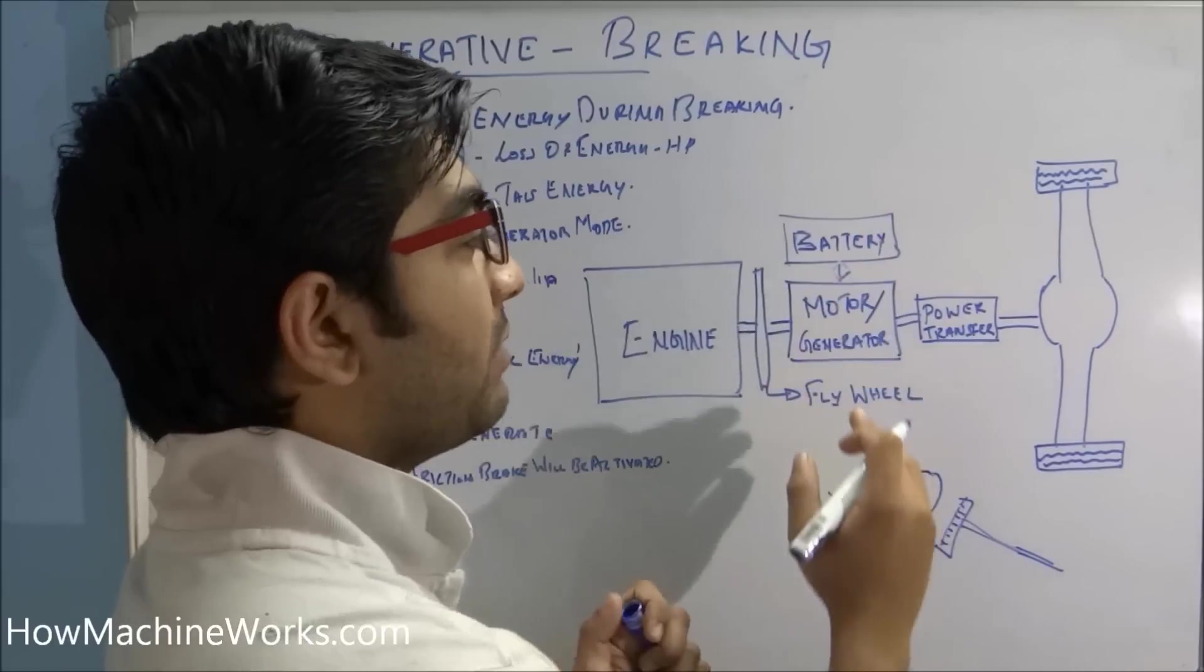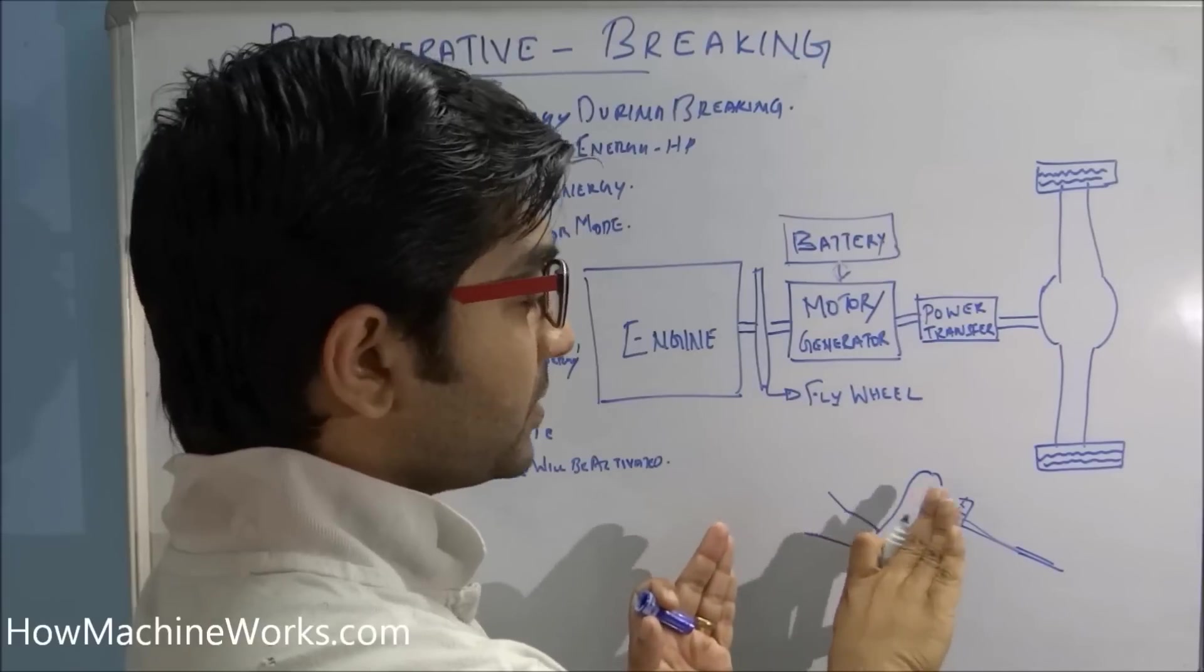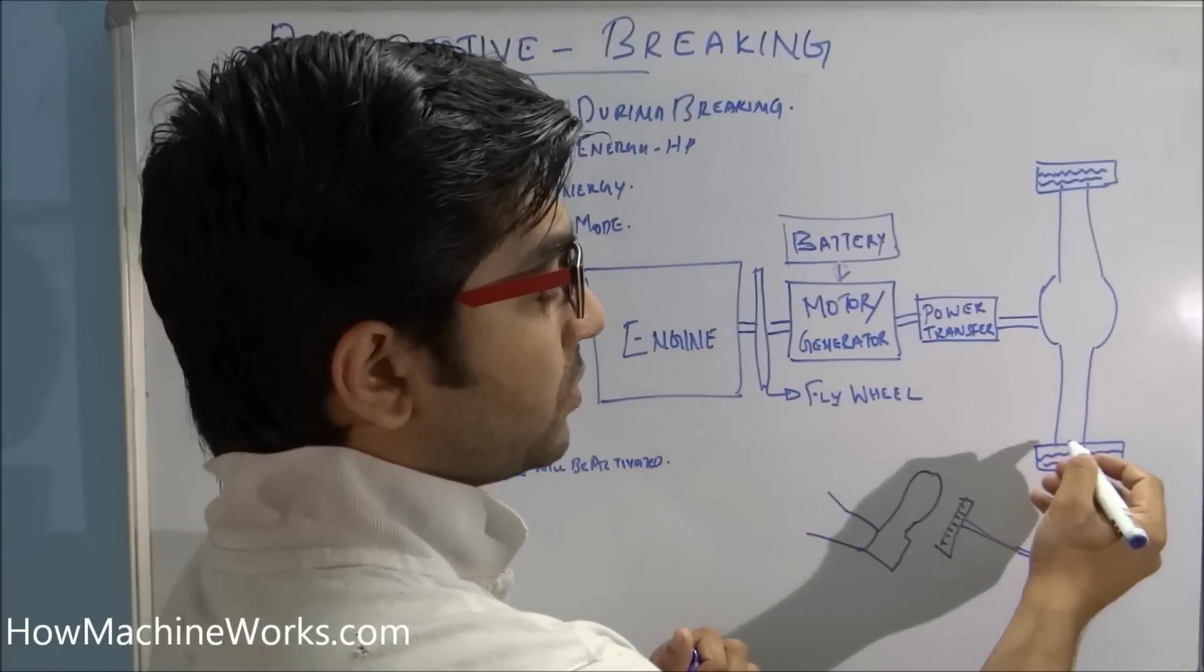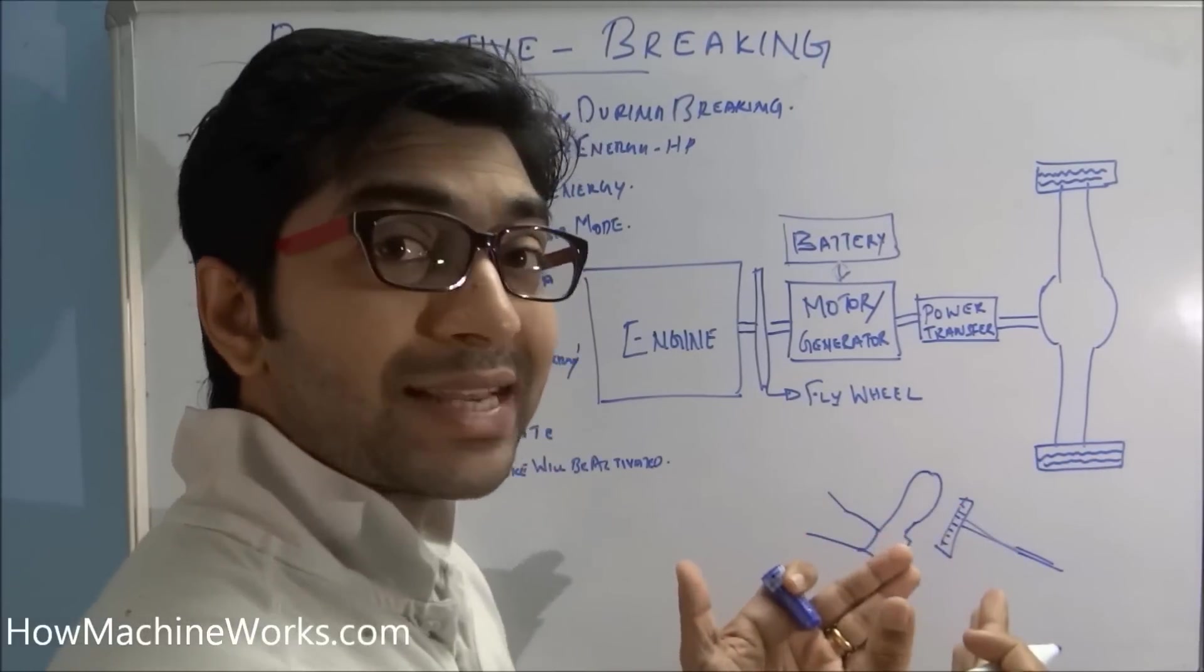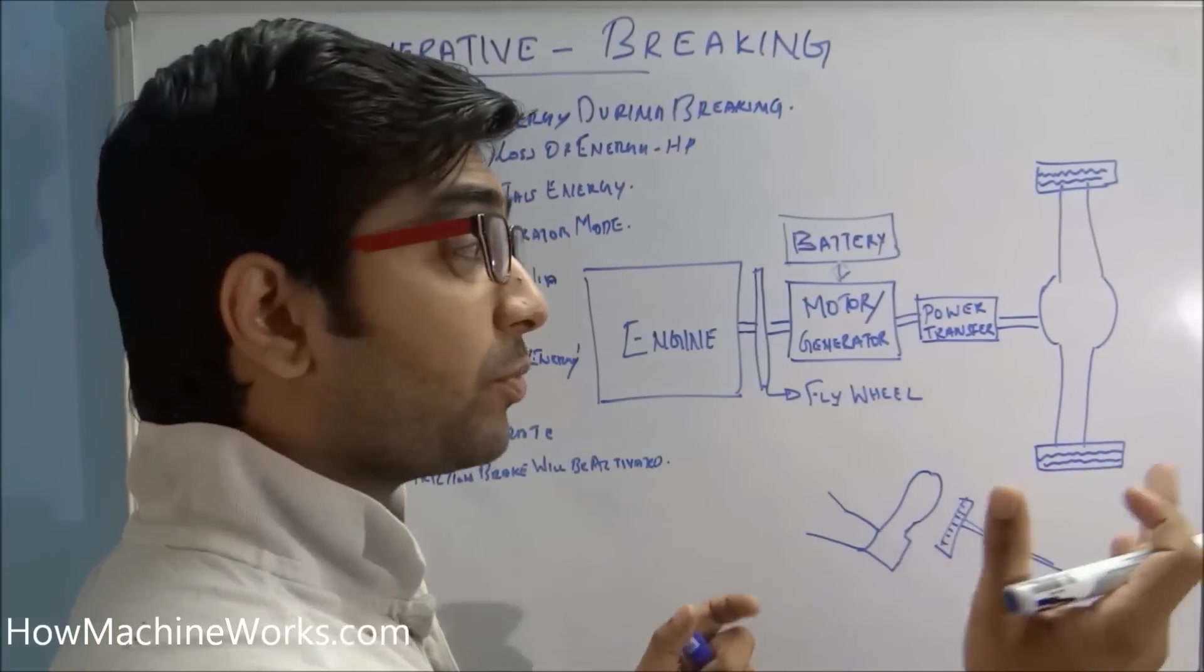Here this is the differential, and here we have a battery. In normal conventional vehicles when we apply the brake, when we press the brake pedal, the brake pad comes in contact with the tires. Heat generation happens because of kinetic energy loss and this heat expels to the environment.